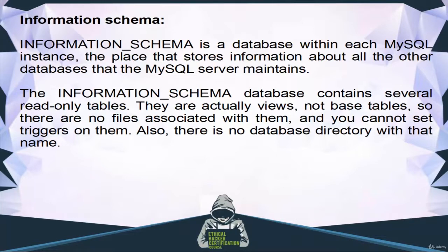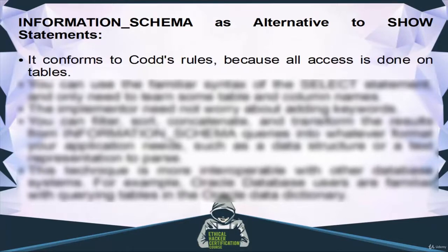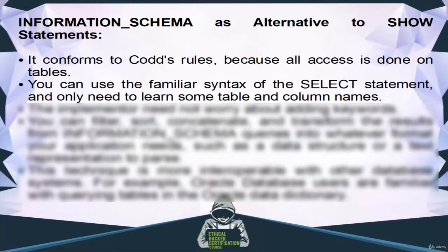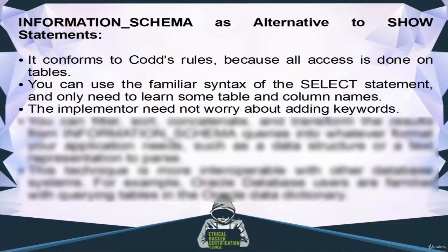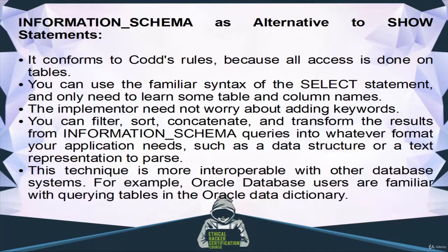Information schema is an alternative to SHOW statements and conforms to Codd's rules because all access is done on tables. You can use the familiar syntax of a SELECT statement and only need to learn some table and column names. The implementer need not worry about adding keywords — you can filter, sort, concatenate, and transform the results from information schema queries into whatever format your application needs, such as a data structure or text representation.